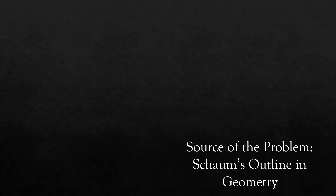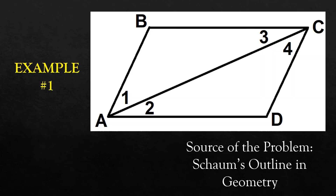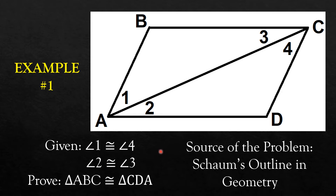Let's start proving geometrical statements. The statements that we will be proving were taken from the book of Schaum's Outline in Geometry. Suppose that in the illustration, you were given that angles 1 and 4 are congruent, and angles 2 and 3 are congruent. The given here is the hypothesis of the geometrical statement, and what to prove — that triangle ABC is congruent to triangle CDA — is our conclusion.